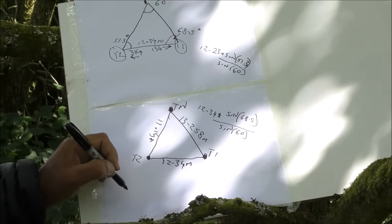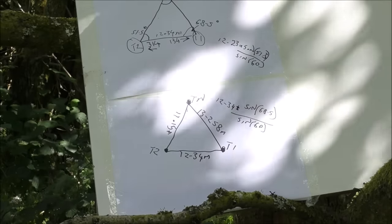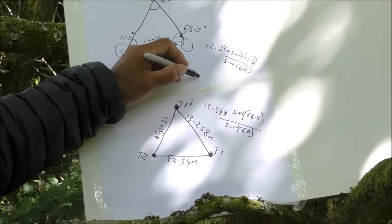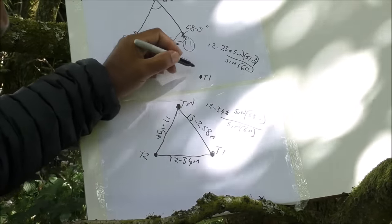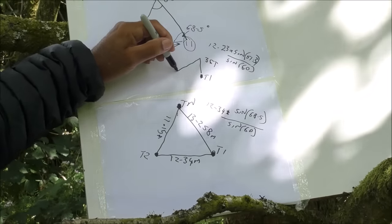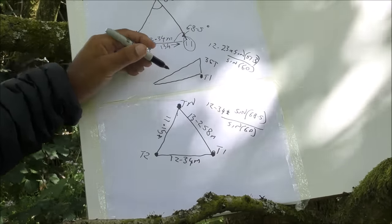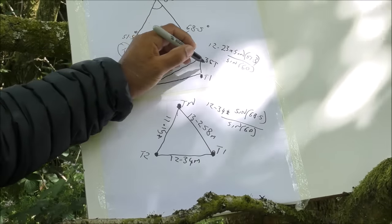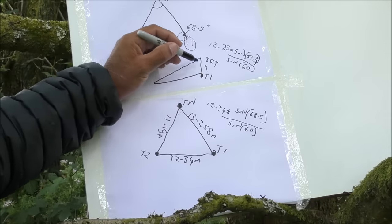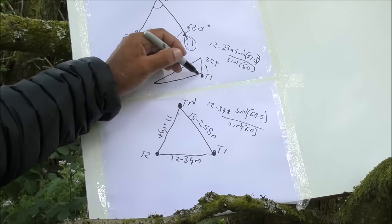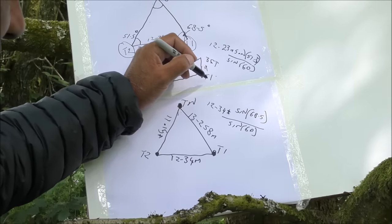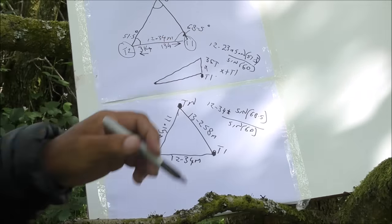Now what about the altitude of the new trig point TN? We know the altitude of T1 and we know the flush bracket is about one meter off the floor. If TN is slightly lower than T1, we can form a triangle using those known points, calculate the three angles again, and that gives us all the side lengths — where X is the height difference. The altitude of TN is then X plus the height of T1.